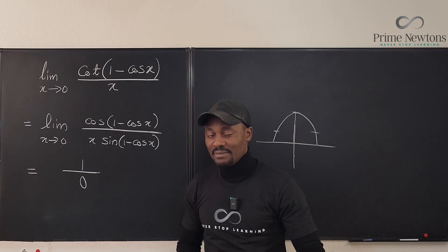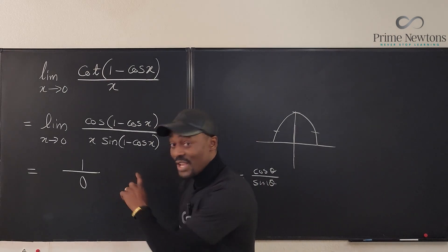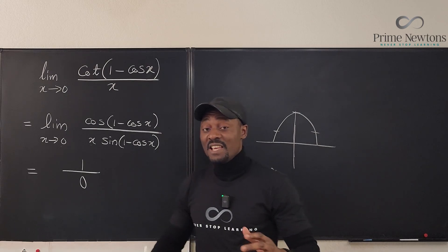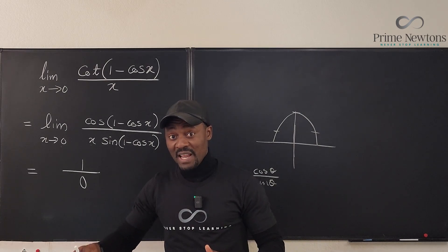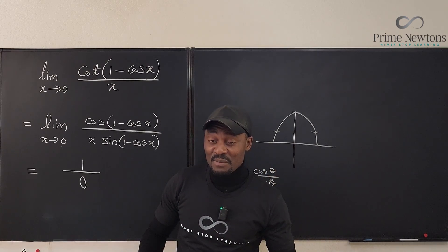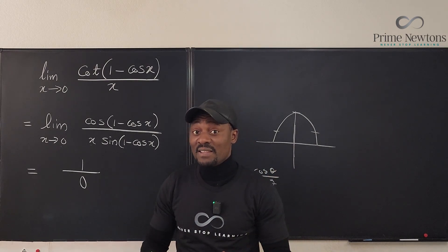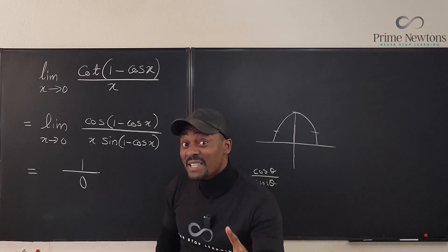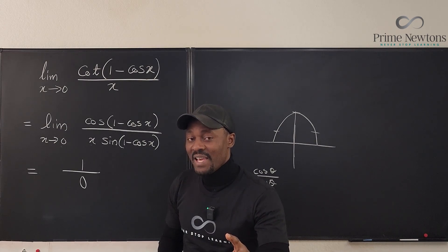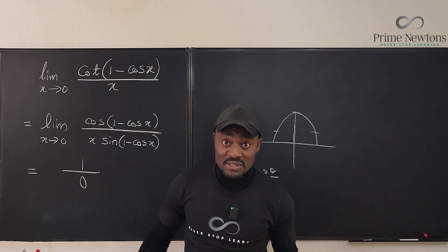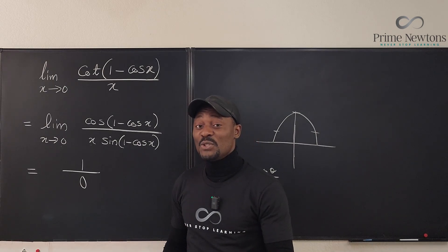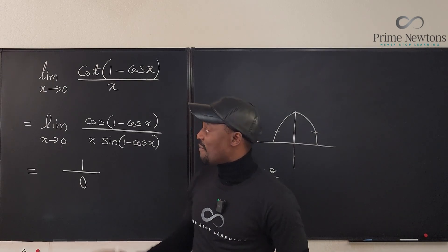Every time you get a one-over-zero form, you must transition to one-sided limits. Check if the limit from the left is the same as the limit from the right. If they are the same, the limit exists. If they are not the same, then the limit does not exist. That's what you must do every time you get a problem like this.